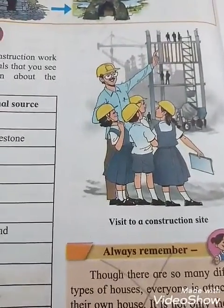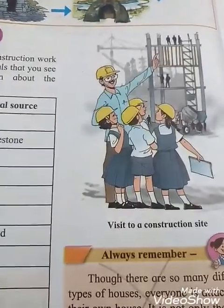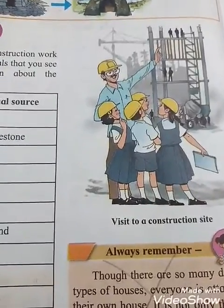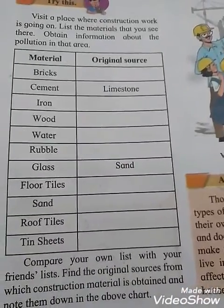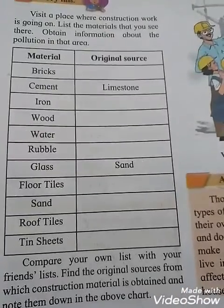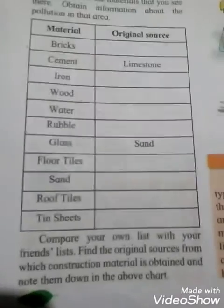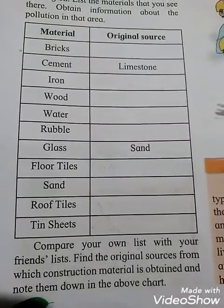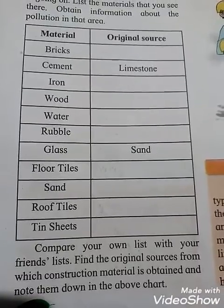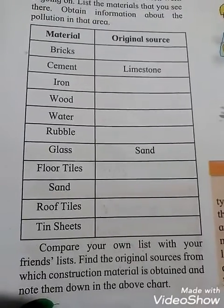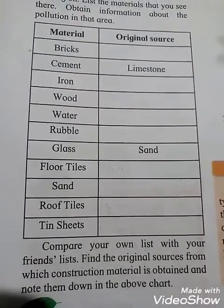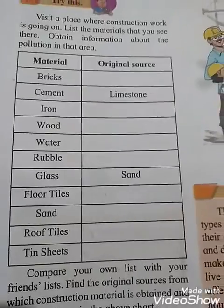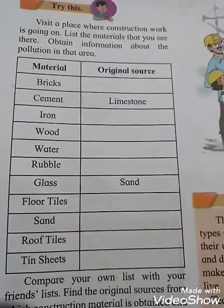See the picture — a visit to a construction site. Observe and write in this table. Compare your own list with your friend's list. Find the original source from which each construction material is obtained and note it down in the chart. It is totally observation-based.